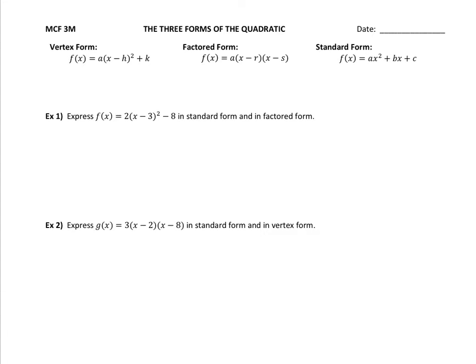We should know the vertex form has this A in front, which is the same value of A in front of the factored form, which is the same value of the A in the standard form. So no matter which format we write for a particular quadratic, those values of A will be the same for each of those three forms.